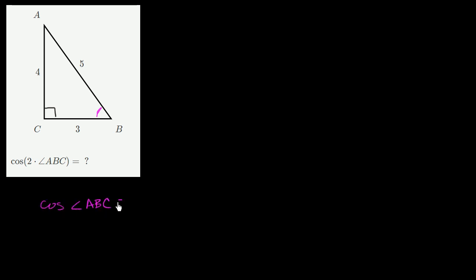They want us to figure out what cosine of 2 times angle ABC is — so that's this angle, ABC. We can't immediately evaluate that, but we do know what the cosine of angle ABC is. Cosine is just adjacent over hypotenuse, so cosine of angle ABC is equal to 3 fifths. And similarly, sine of angle ABC is opposite over hypotenuse, which is 4 fifths.